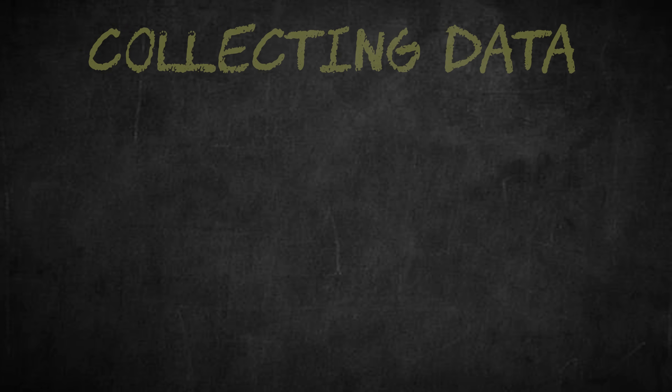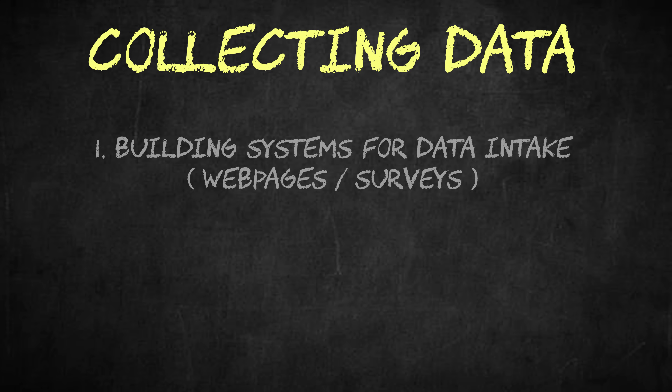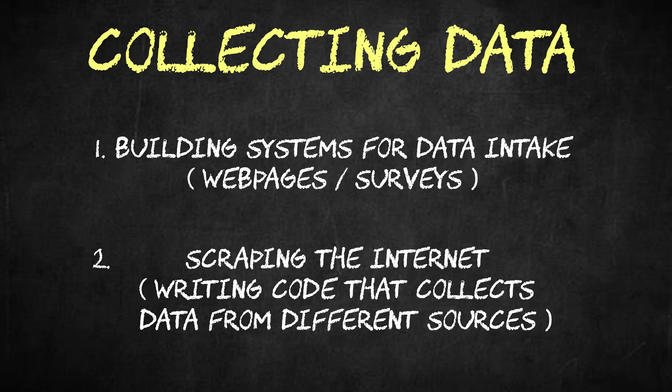The first way we generate value from data is through collecting it. While it isn't necessarily a core role of all data scientists, some data scientists use their skill set to collect information. This can be done through building systems for data intake, like web pages or surveys, or it can be done through scraping the internet — meaning that you're writing code that collects data from different online sources.